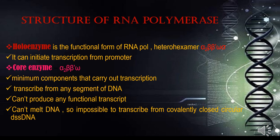The core enzyme represents alpha-2, beta, beta-dash, and omega. The sigma factor — the initiation factor — is absent from the core enzyme. The core enzyme consists of minimum components that carry out transcription. The core enzyme cannot distinguish a specific promoter site from any other site because there is no sigma factor. They cannot produce any functional transcript, as they frequently dissociate from the template. The core enzyme can transcribe from single-stranded linear or circular DNA and a double-stranded circular DNA with a nick.